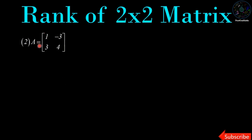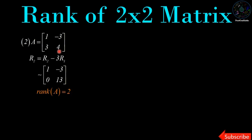Second example: A is equal to [1, -3; 3, 4]. Now we convert into the row echelon form. Apply row operation R2 = R2 - 3R1, multiply the first row by 3 and add to the second row. So -3 + 3 = 0 and 9 + 4 = 13. This is the row echelon form of matrix A and the number of non-zero rows is 2, therefore rank of A is equal to 2.